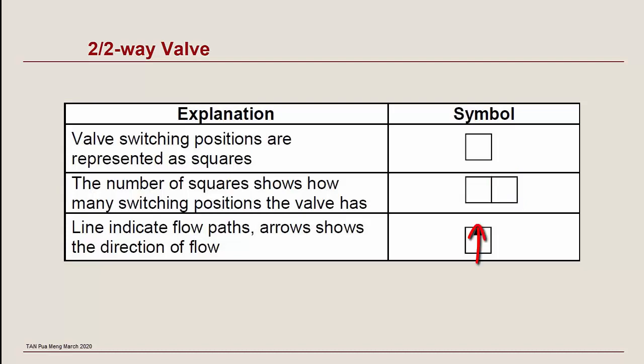Line and arrowhead indicate airflow paths and direction. Number of ports can be identified by the intersection point on the horizontal edge of the squares or switching position.